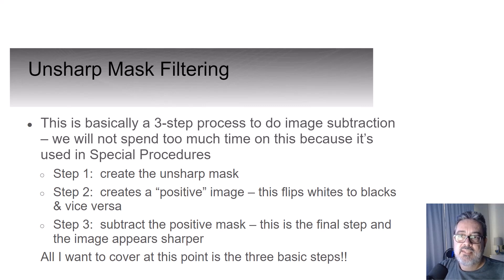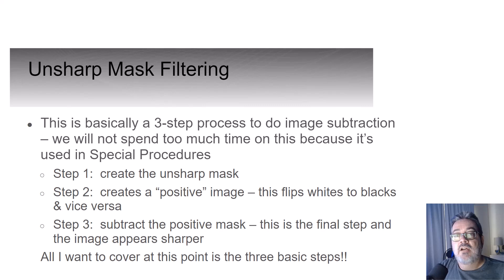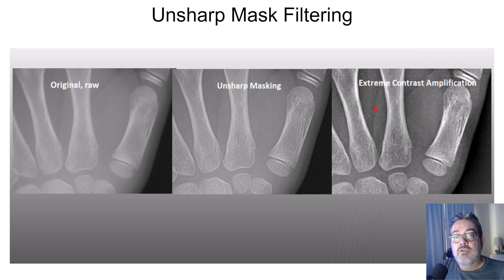Unsharp mask filtering is a three-step process for image subtraction. We use subtraction in interventional radiology and special procedures for angiograms to remove all anatomy except contrast-injected blood vessels. First, we create an unsharp mask. Second, we create a positive image that flips whites to blacks and vice versa. Third, we subtract the positive mask. In the general x-ray example shown, the original raw image is on the left; after applying the unsharp mask, the right image shows extreme contrast amplification resulting in a crisper image that masks soft tissue background and enhances bony detail — note the addition of image noise as well.